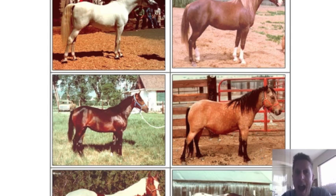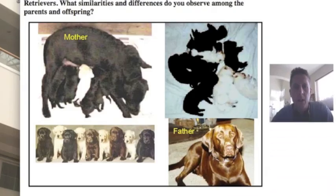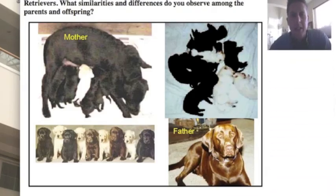Today we want to figure out how these phenotypes exist — what is the source of the variation. I'm going to run through a number of slides to see if we can figure out what the source of phenotypic variation is for a species. Here's a slide showing Labrador retrievers, which come in a number of different colors.